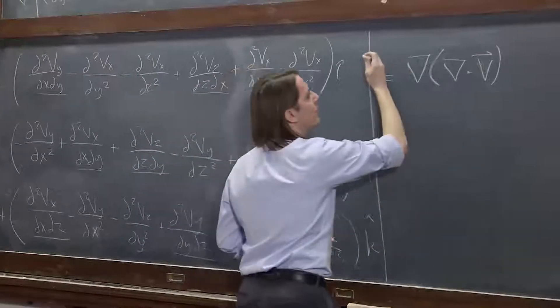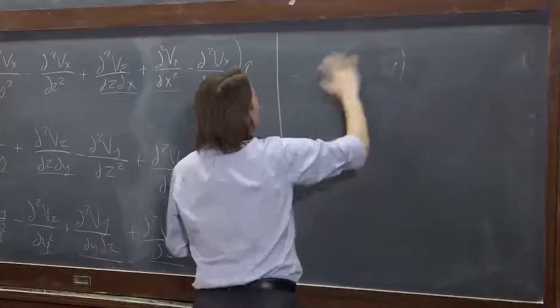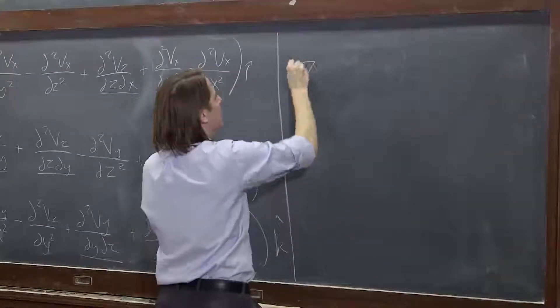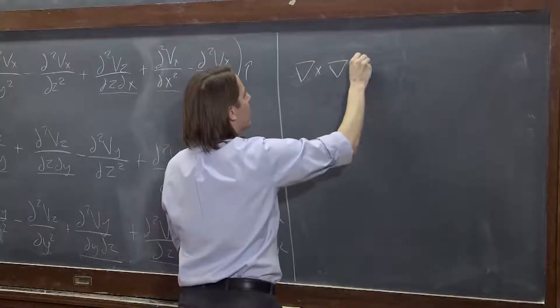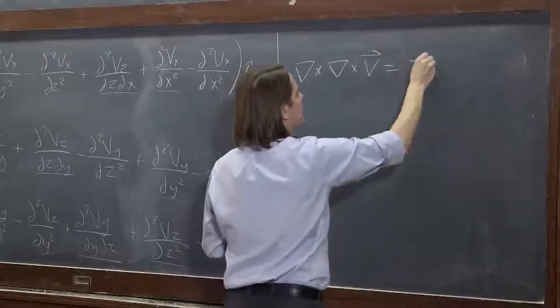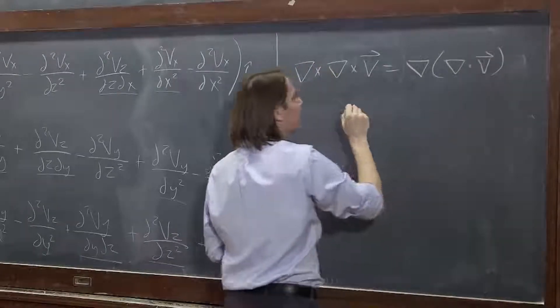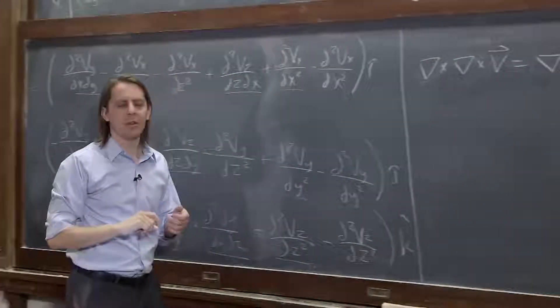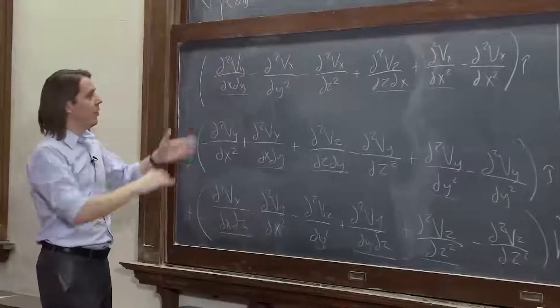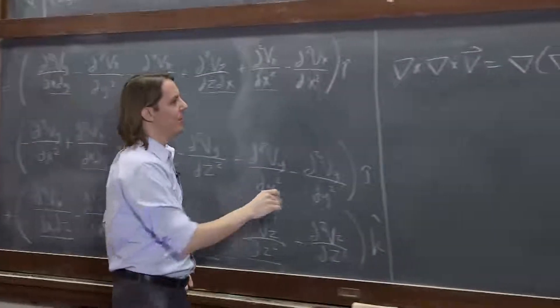So del cross del cross v. Let's write it more explicitly. Del cross del cross v is del of del dot v. But we're not done. There's still something left. There's a lot left, right? There's all kinds of stuff left.